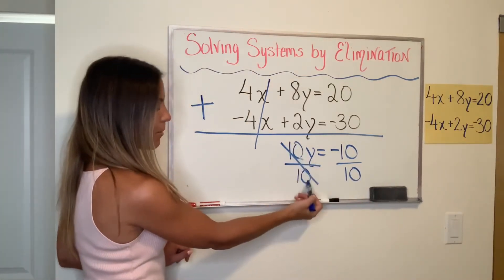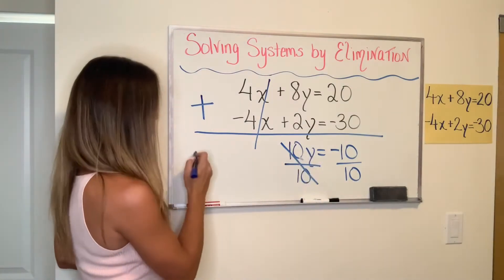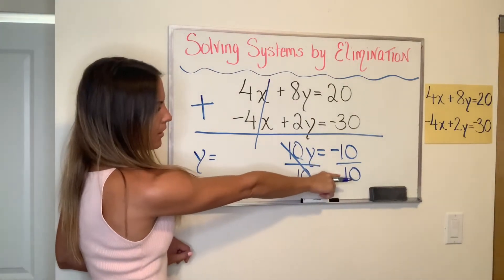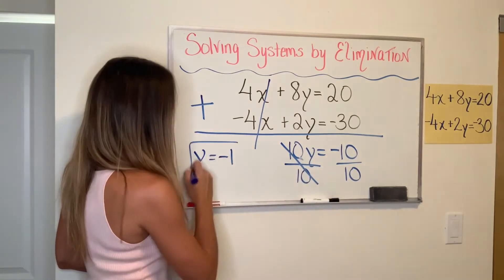1 times Y is just Y. And on my right side, negative 10 divided by 10 is negative 1. And just like that, I already have the Y value for my solution for this system.